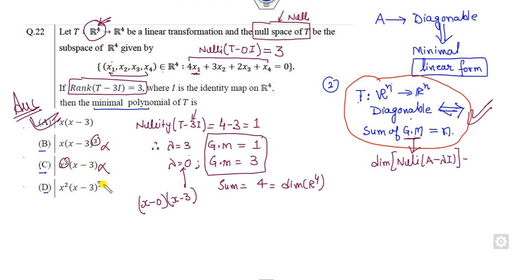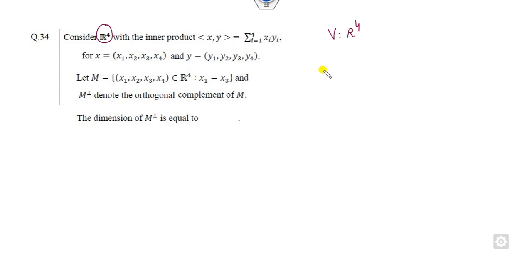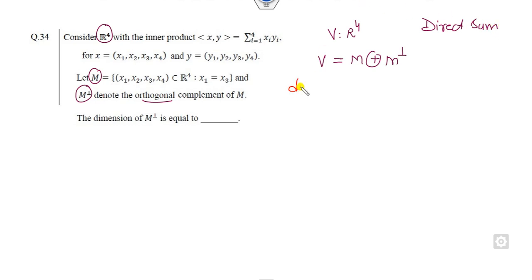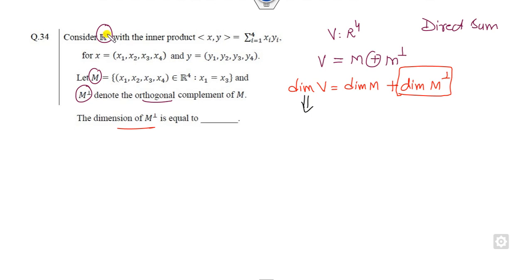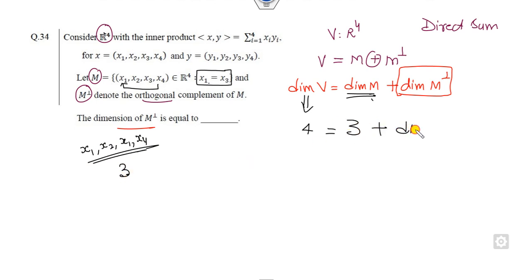Next, vector space V is R^4 and we need to find the orthogonal complement M⊥. We know that V is the direct sum of M and M⊥. So the dimension of V equals dimension of M plus dimension of M⊥. The dimension of V (R^4) is 4. M is given as a linear relation with four vectors and one relation, so we can express it with 3 linearly independent vectors — dimension of M is 3. Therefore 4 = 3 + dimension of M⊥, giving dimension of M⊥ equals 1.